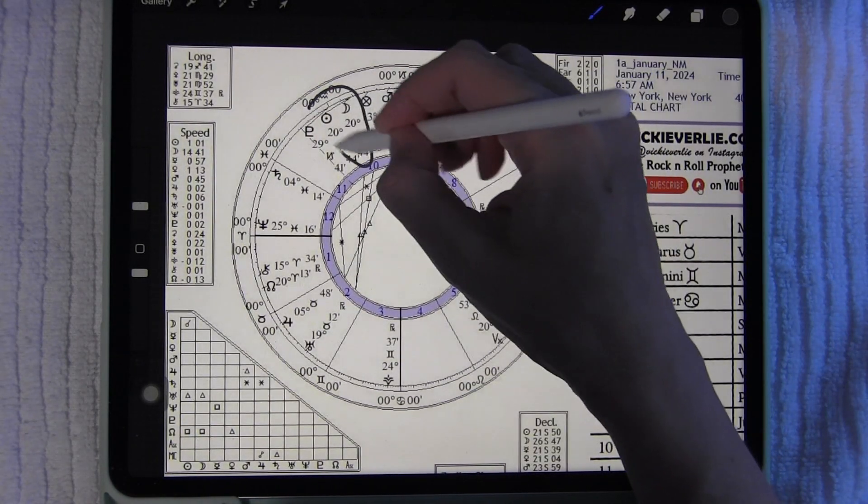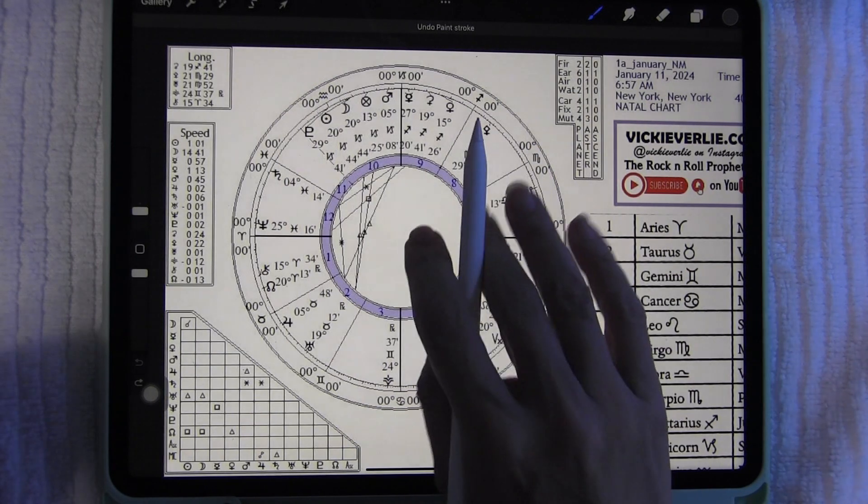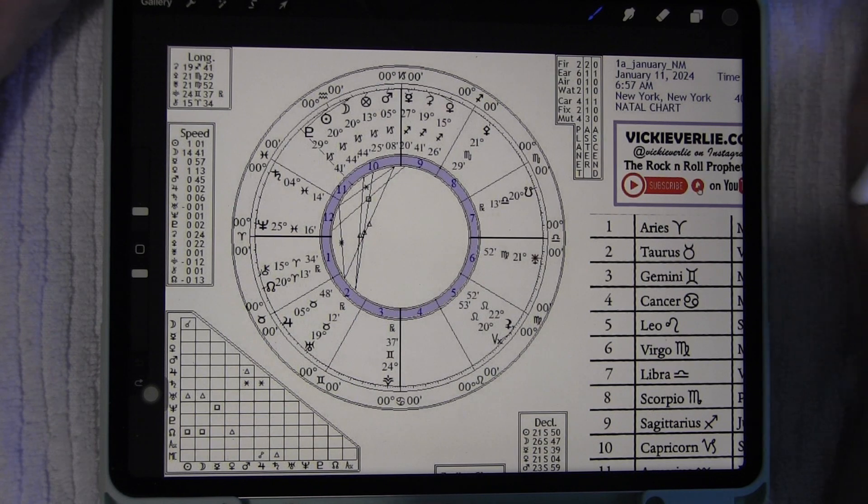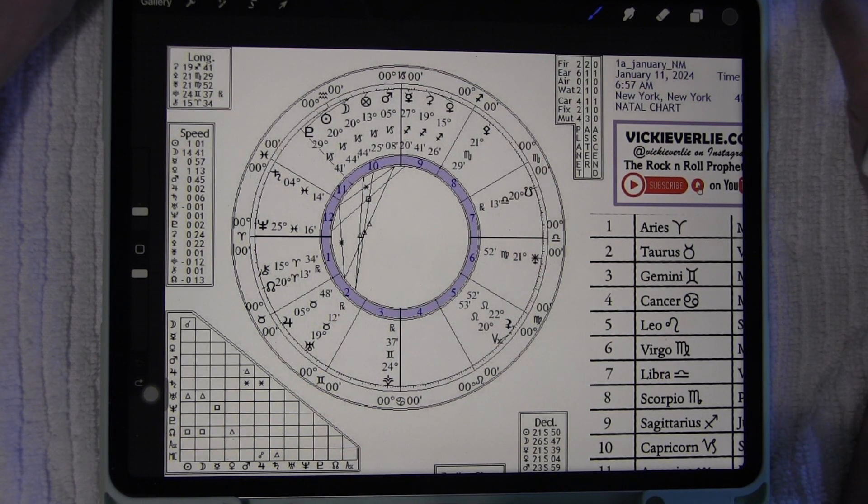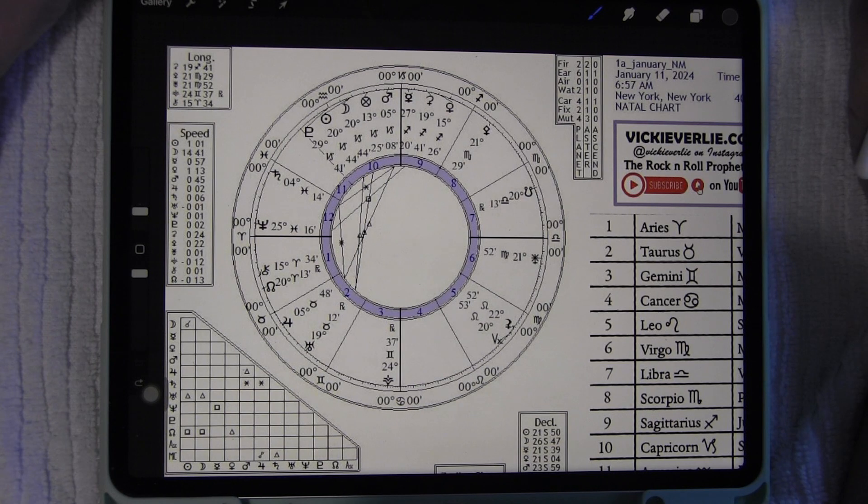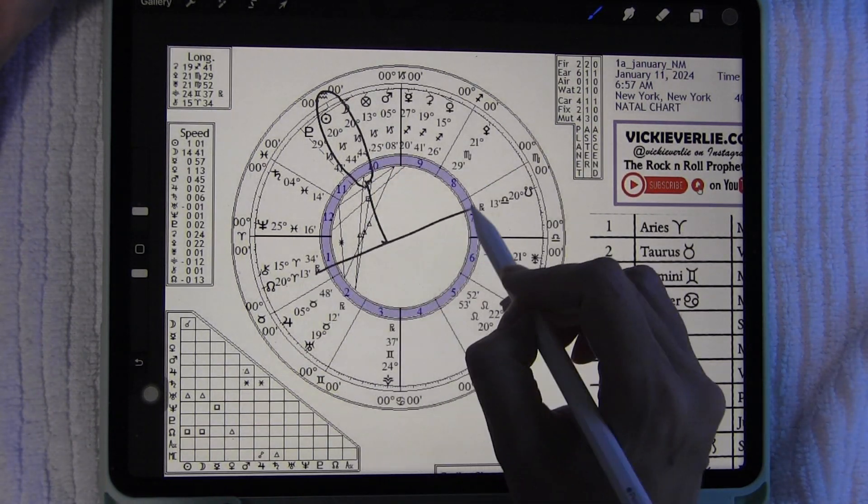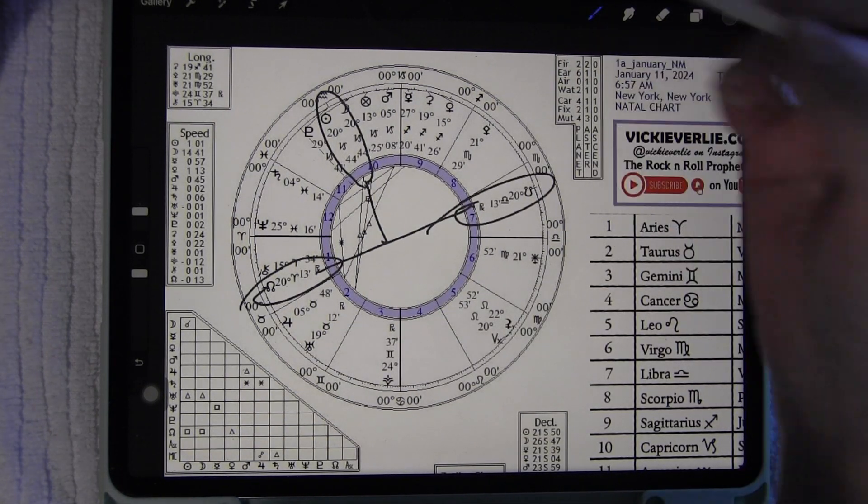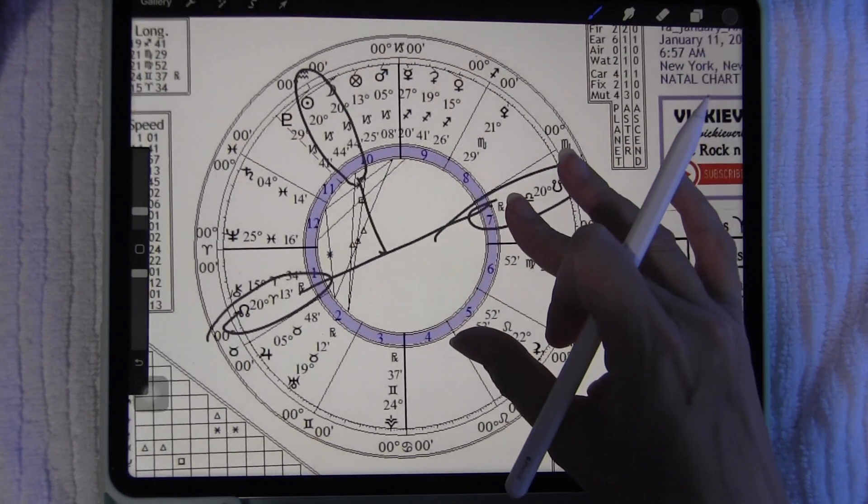Here we have this new moon in the sign of Capricorn at 20 degrees of Capricorn, in a wide orb conjunction here with Pluto. It is a thing of building, of making things stronger, of making things better. Capricorn is ruled by Saturn and Saturn is the builder of the zodiac. It also can bring karmic things to the forefront. It's also making a big square with the nodes, with the north node and south node at 20 degrees of Libra and 20 degrees of Aries.